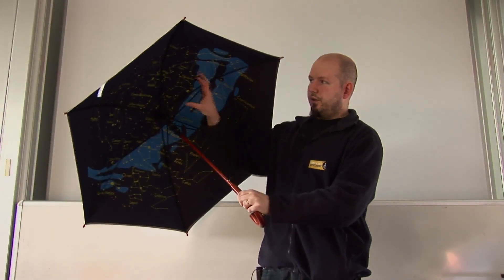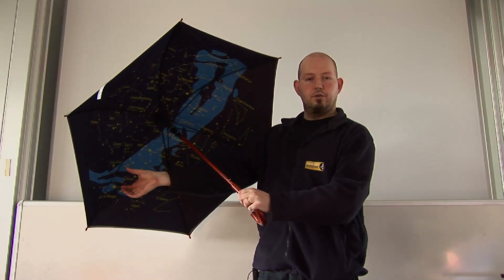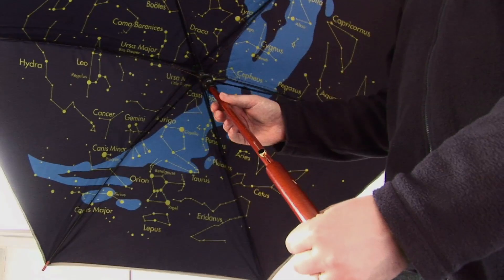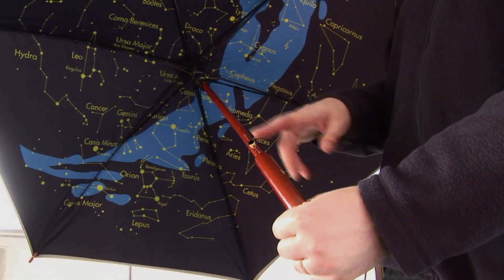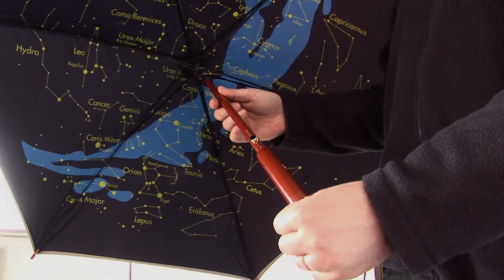We've got all the stars of the northern hemisphere printed on the inside. We also have the band of the Milky Way traveling around as well. The handle of the umbrella represents the North Pole, so up at the top is the pole star or the North Star or Polaris.